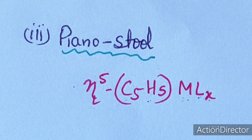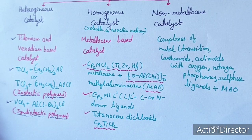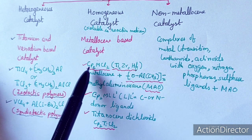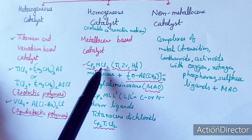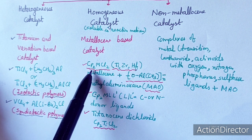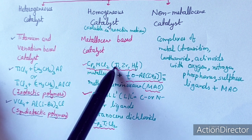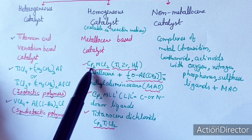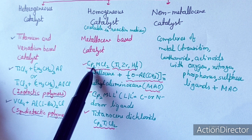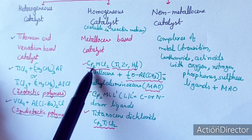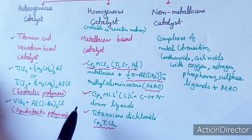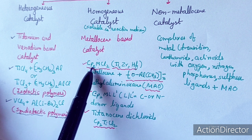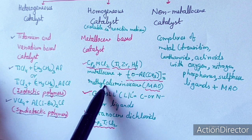Returning to Ziegler-Natta catalysis, the second class of Ziegler-Natta catalyst is metallocene-based. Its general formula is Cp2MCl2 — a bent metallocene where M may be titanium, zirconium, or hafnium. If M is titanium, it is titanocene dichloride. This precatalyst cannot react with the olefin alone; it requires methylaluminoxane (MAO) to become active.